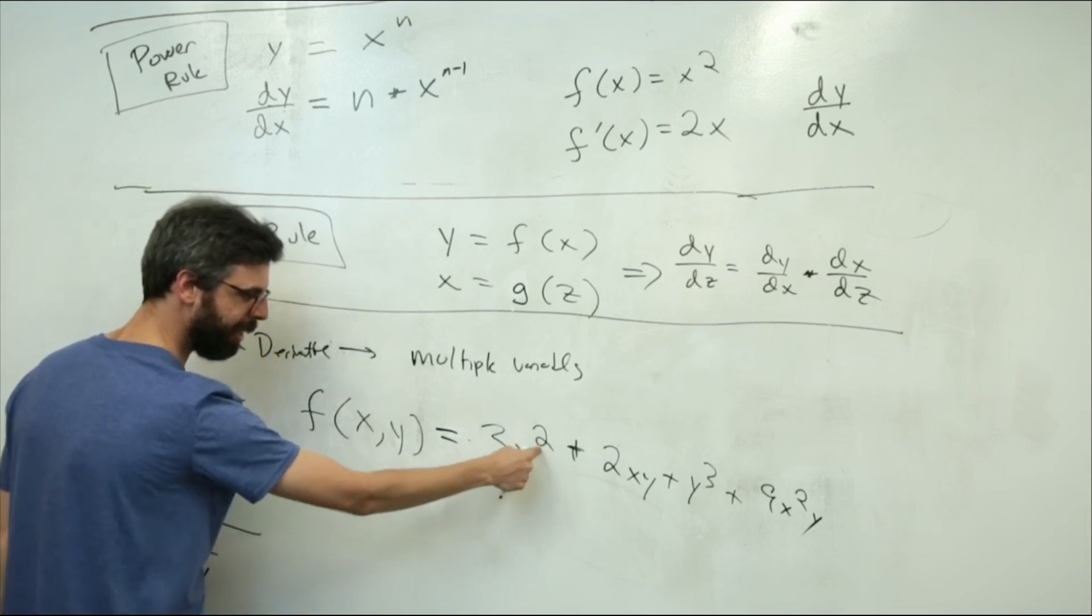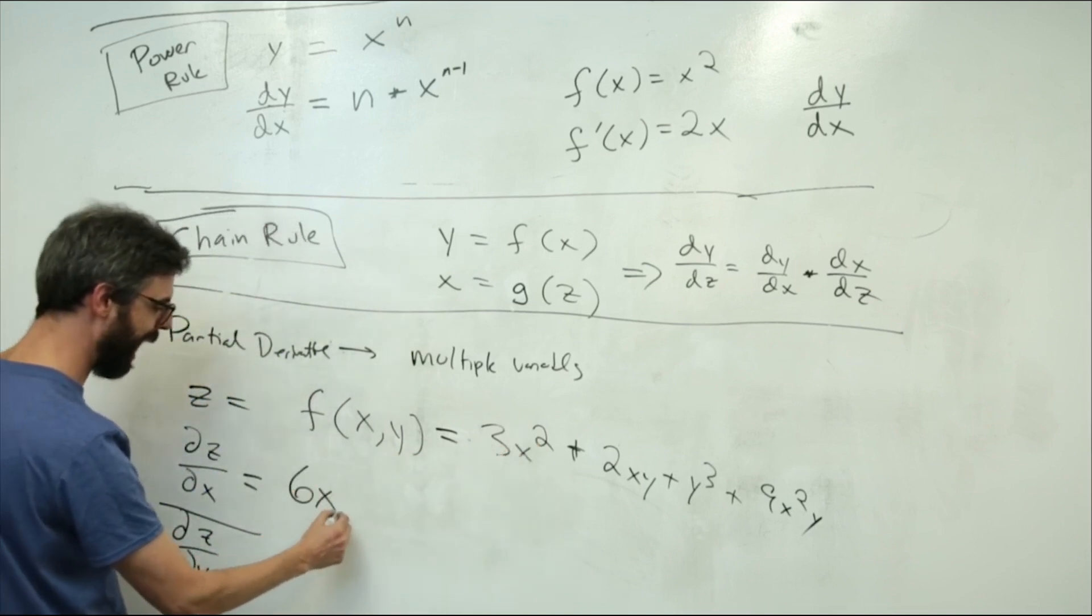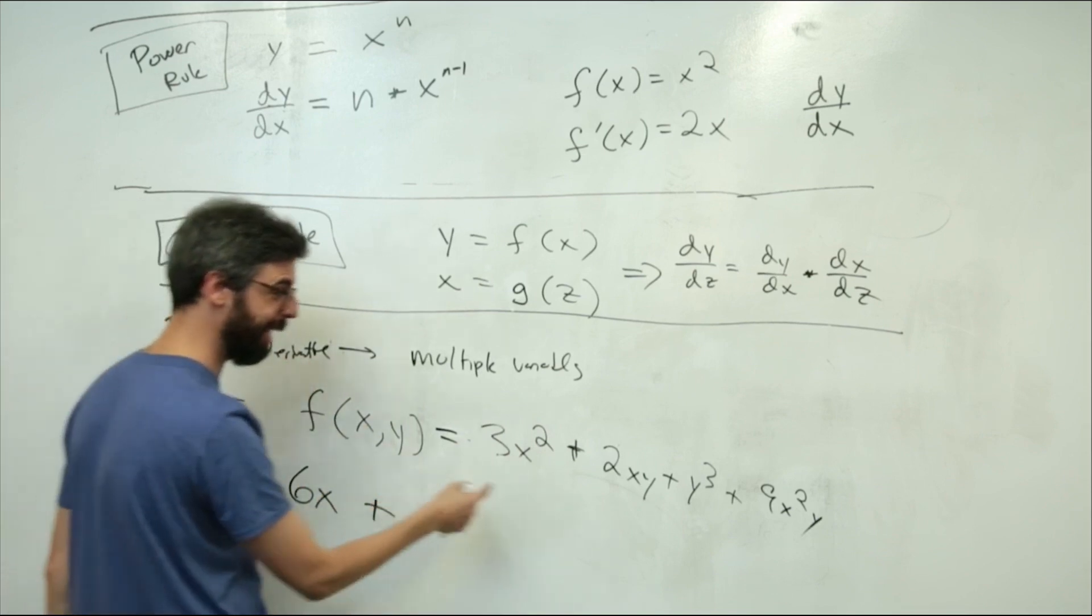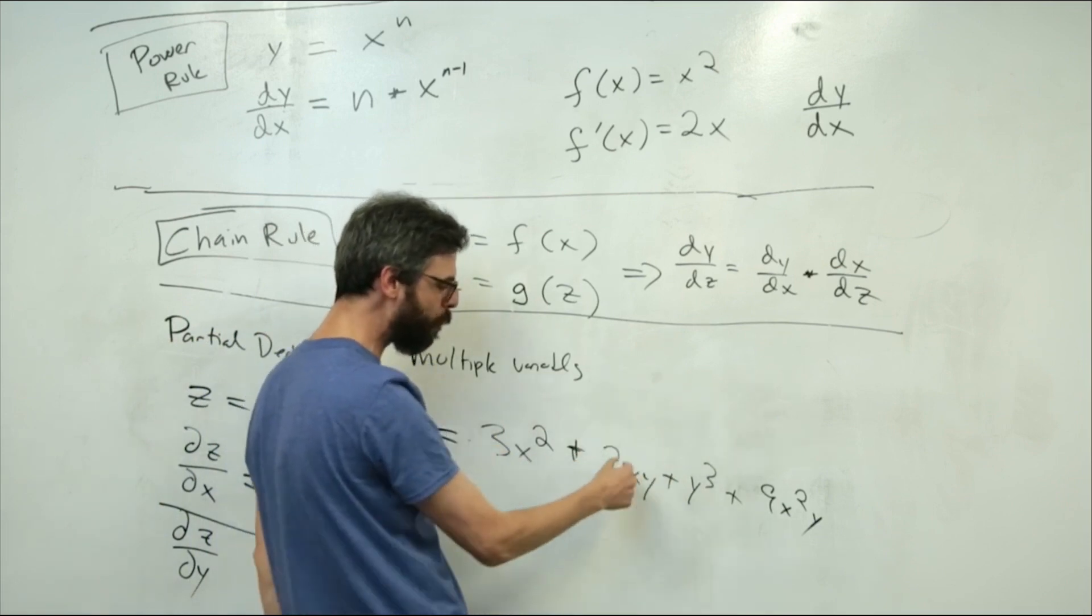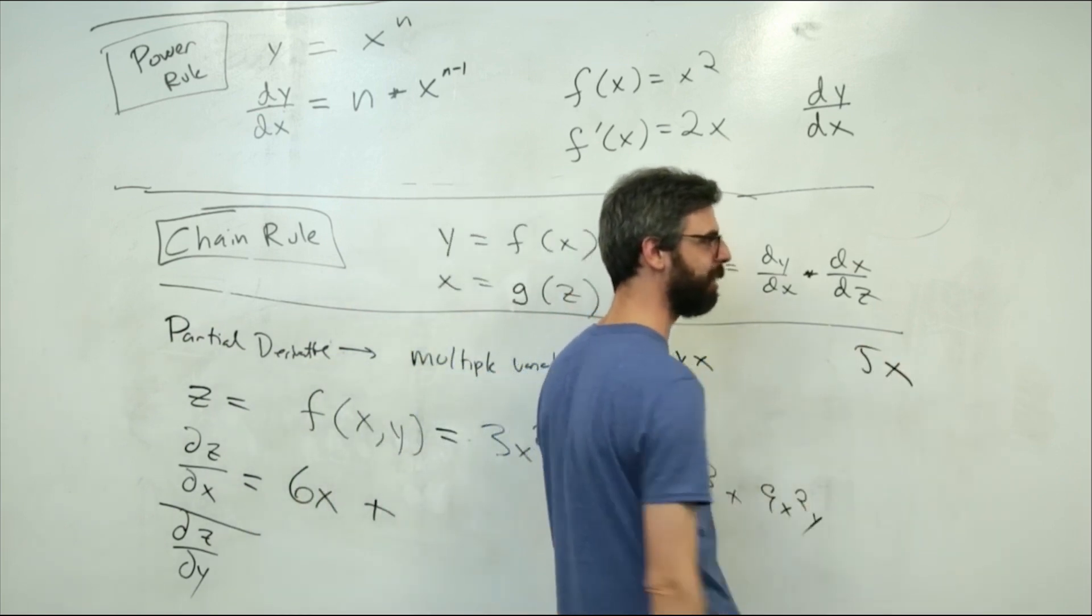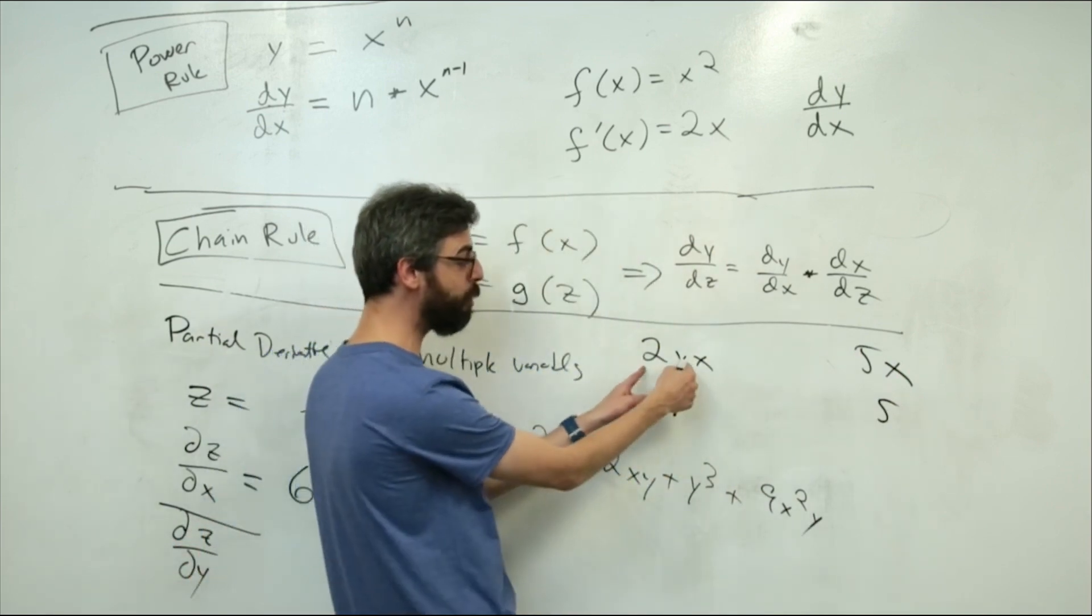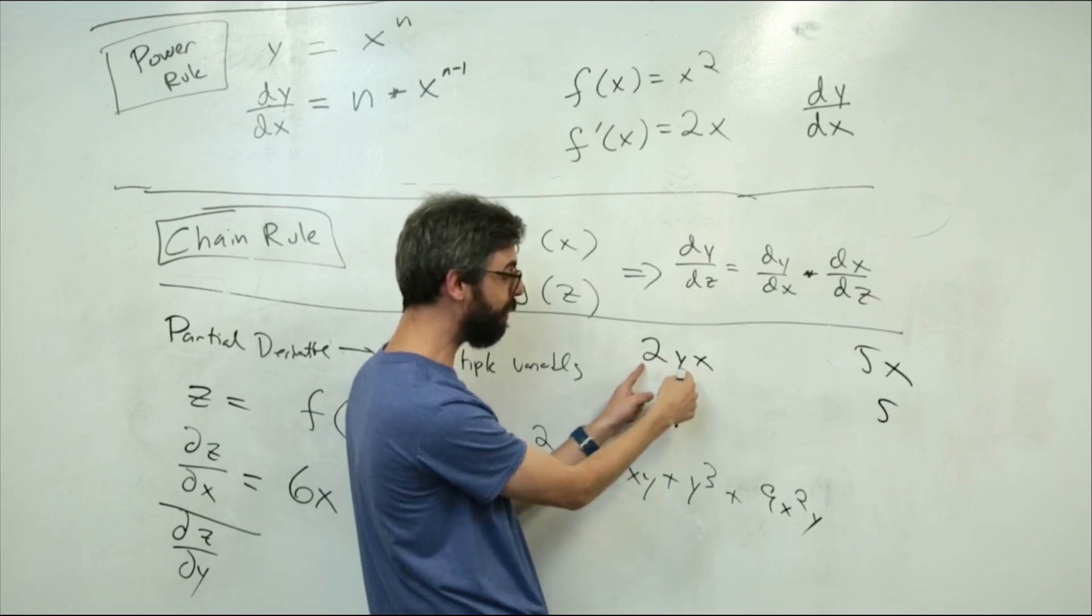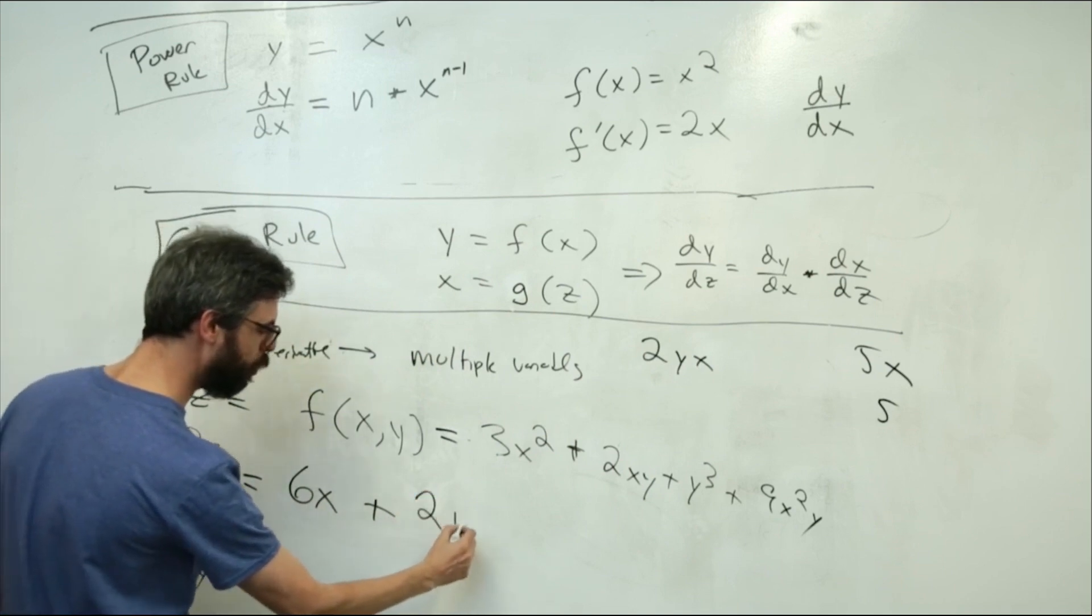so this little section I can do just with the regular power rule. So 2 times 3 is 6, so 6x, 2 minus 1 is 1, 6x, plus, now this is tricky. So 2xy, I want the derivative relative to x. Another way of writing this is 2yx. Now think about this, if I had 5x, the derivative of 5x would just be 5. And in this case, 2 times y is a constant. I want to treat it as a constant. So the derivative of 2yx, or 2xy is just 2y.